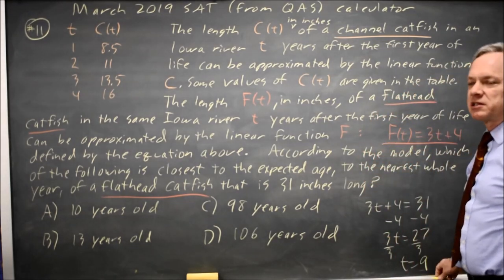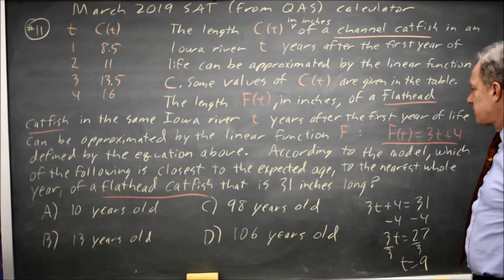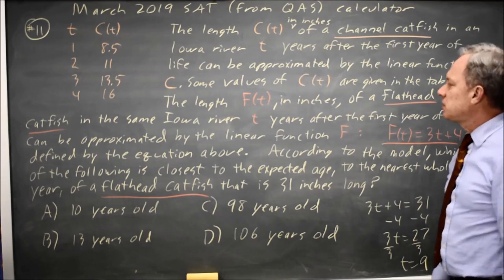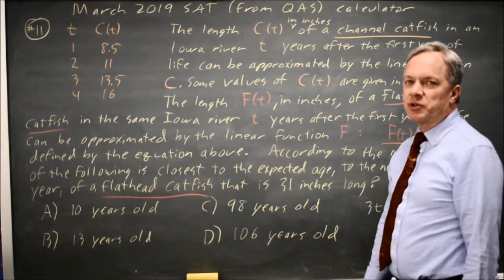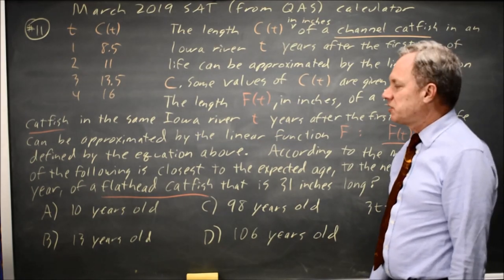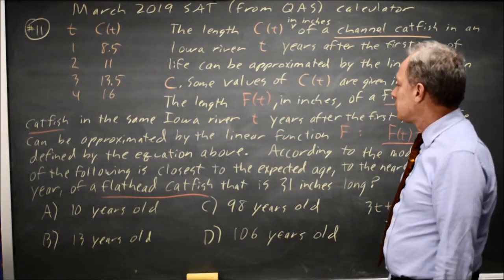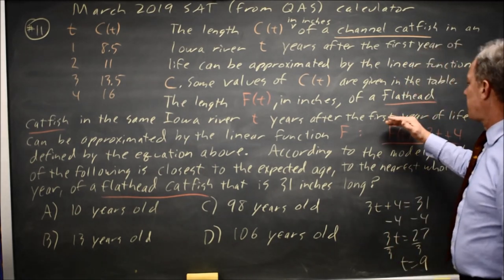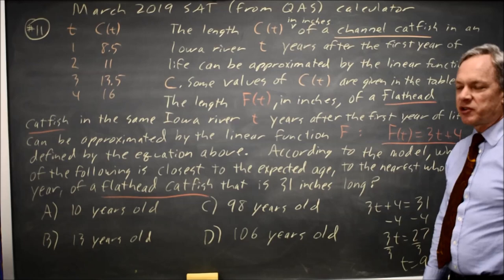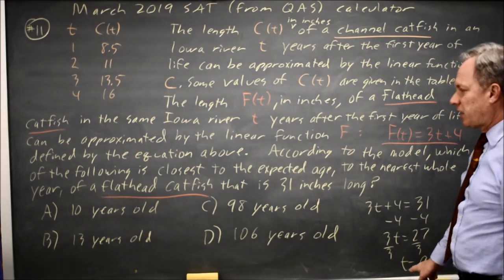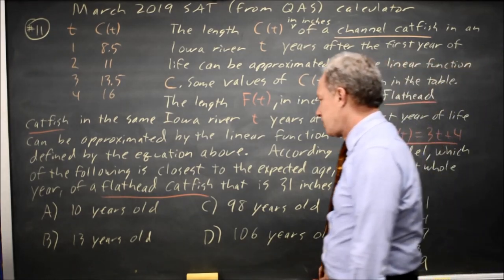Now let's read the question more carefully and see why I came out with 9 instead of 10. t is not the age of the catfish in years, and you often have to read carefully because College Board really could give you the choice between 9 and 10. t is years after the first year of life. So to get the age of the catfish, you have to add 1 to t, and that gives me 10 as my answer.